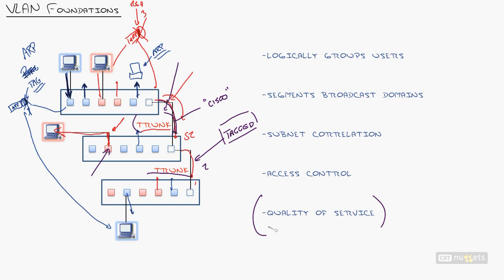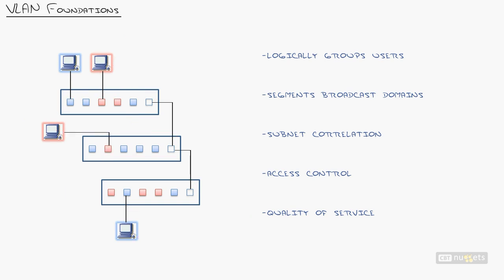VLANs allow you to very easily configure quality of service. I can create a VLAN of devices and then go to a router connected to a WAN link where bandwidth is limited and say at all times the blue VLAN gets priority over the red VLAN. It's very easy to do that, whereas without VLANs it's very difficult to identify devices from each other.